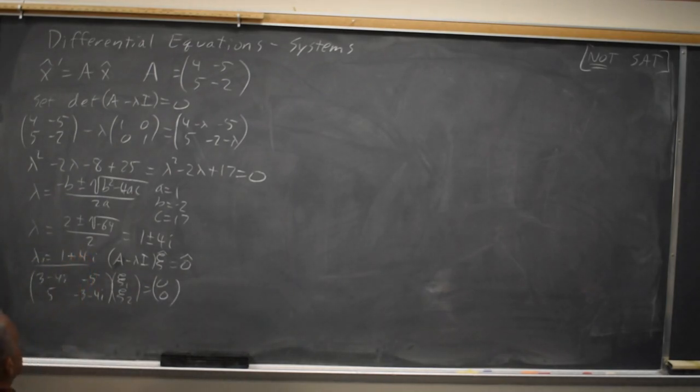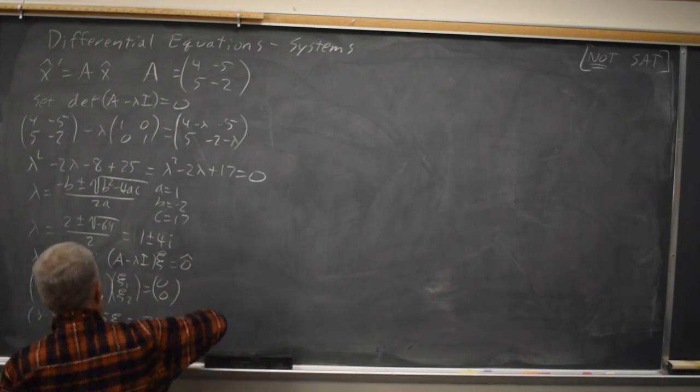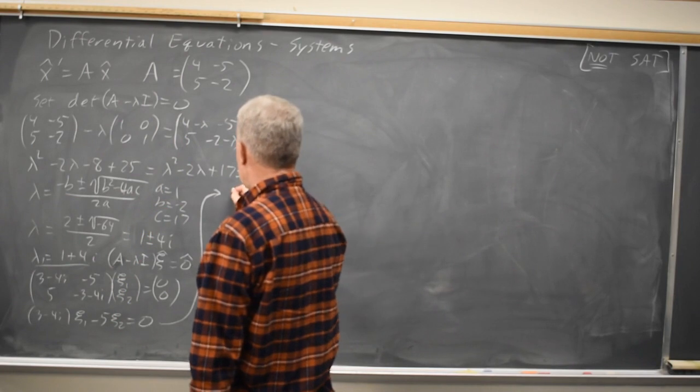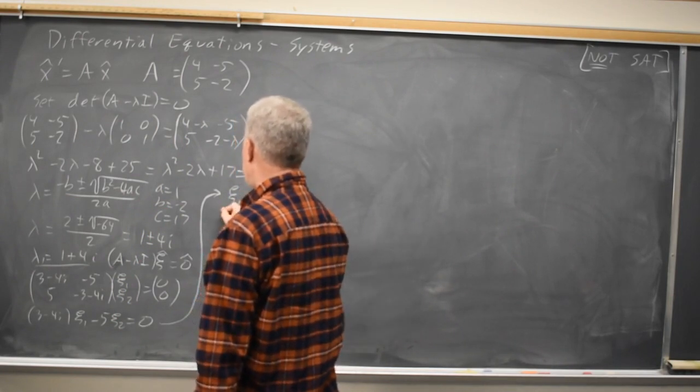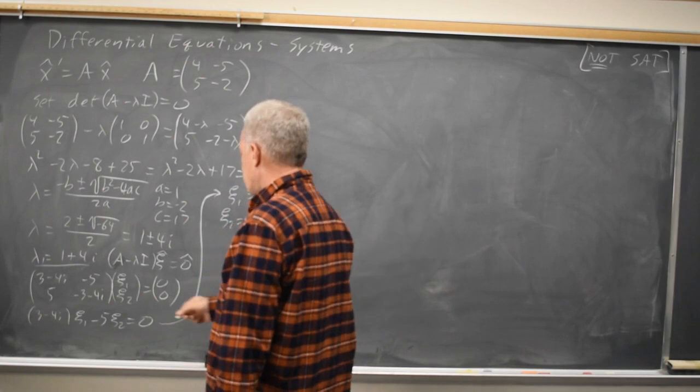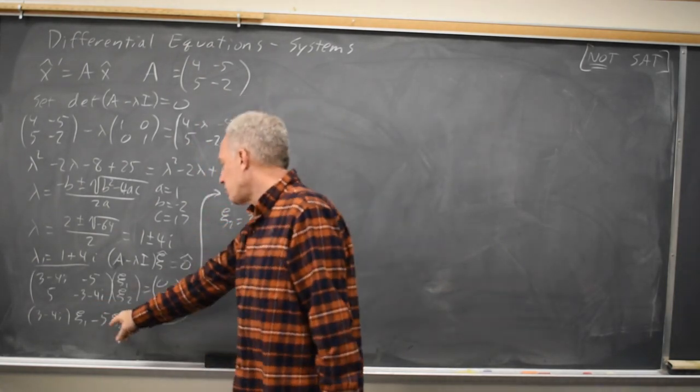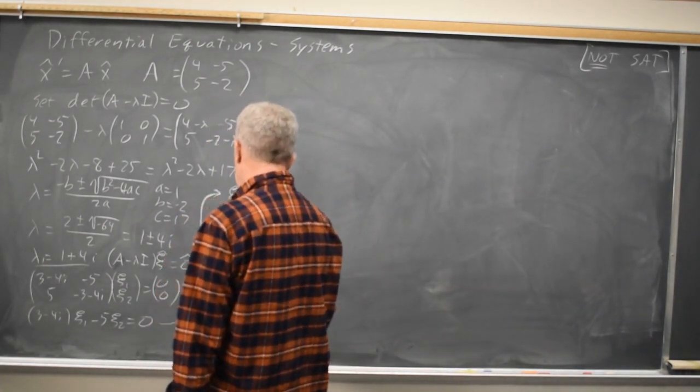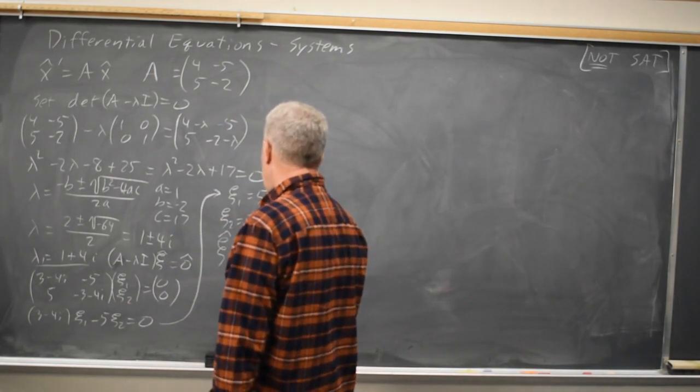These, it turns out, give you the same result. One is a multiple of the other, so I have 3 minus 4i times xi1 minus 5 xi2 equals zero. If I choose, swap the coefficients and flip the sign on one, xi1 equals 5, xi2 equals 3 minus 4i. Then 3 minus 4i times 5 plus negative 5 times 3 minus 4i will give us zero. So that does give us an eigenvector, a complex eigenvector that works. So that's 5 and 3 minus 4i.